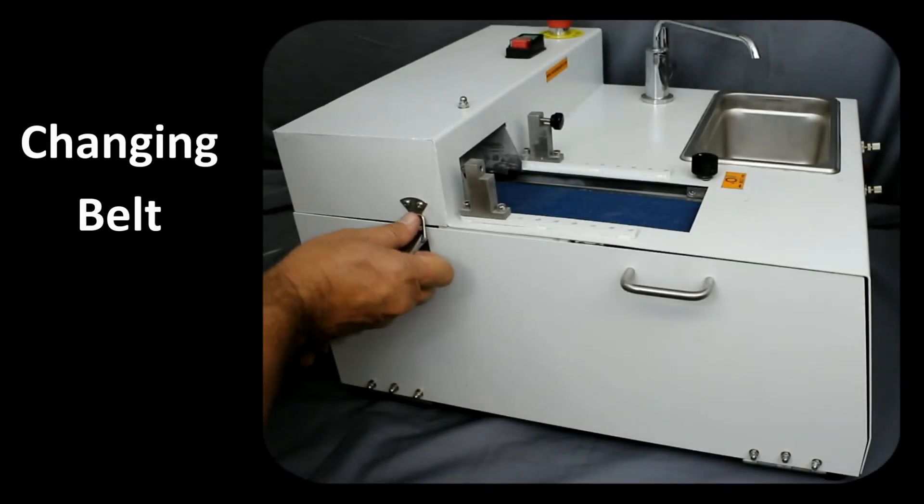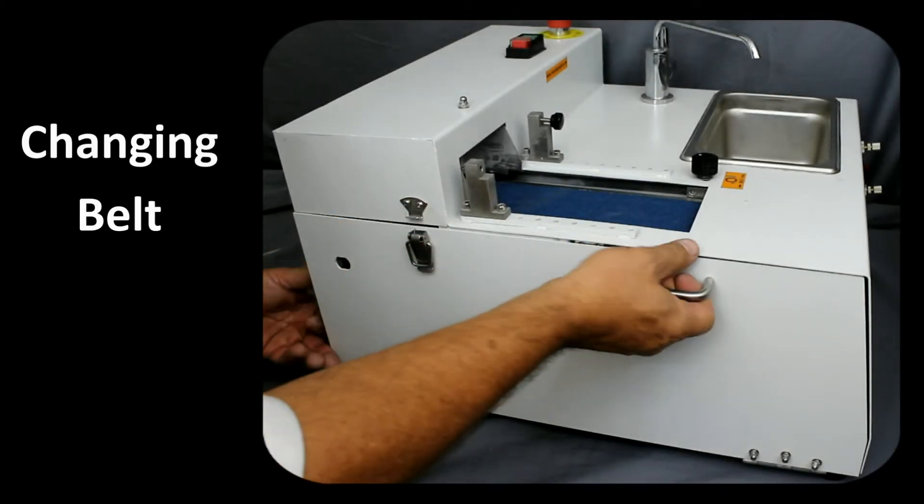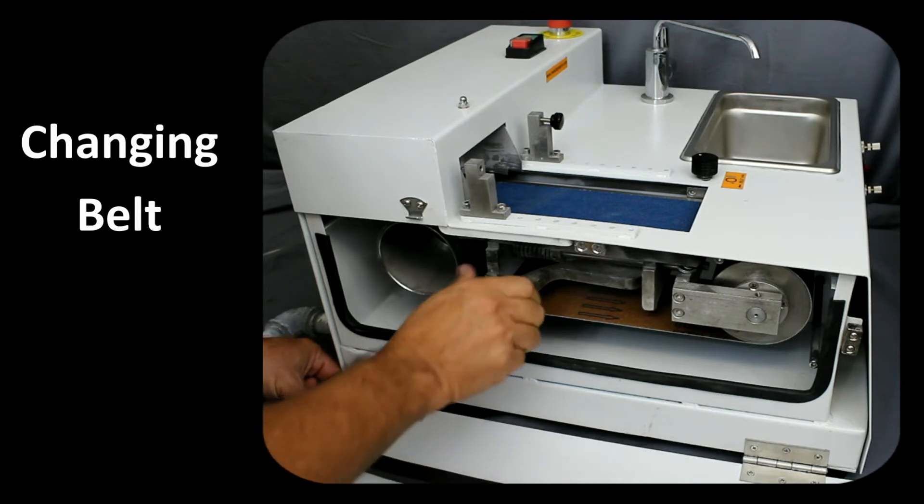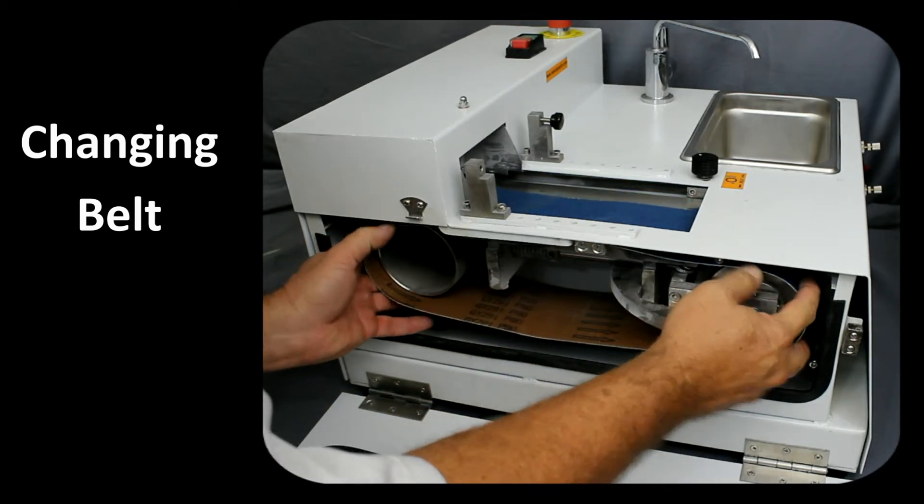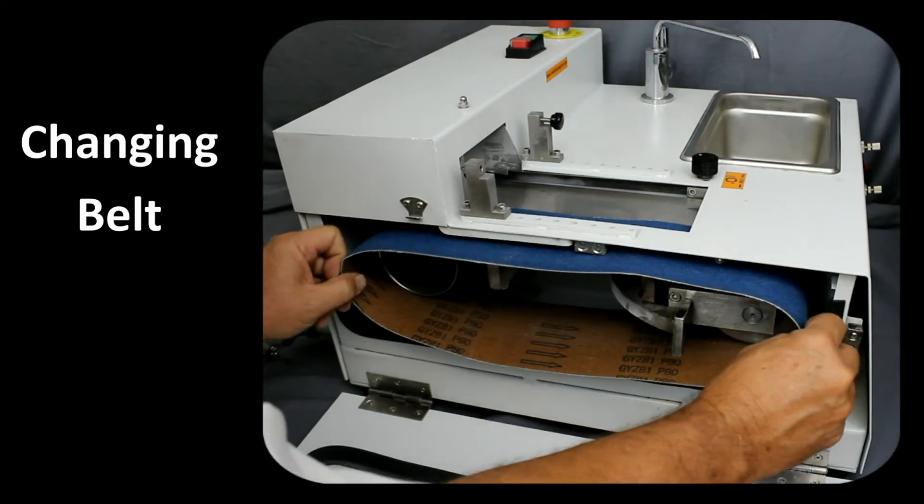Changing the Penta 7500 abrasive belt is very simple. Open the side panel and pull on the belt release lever. Remove the old belt and replace with a new belt.